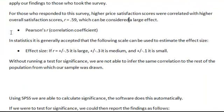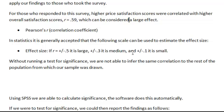When we go to write this up, here's what we would say: For those who responded to this survey, higher price satisfaction scores were correlated with higher overall satisfaction scores, R equals 0.59, which can be considered a large effect. Because if you remember our effect size scale — 0.5 is large, 0.3 is medium, and 0.1 is small.